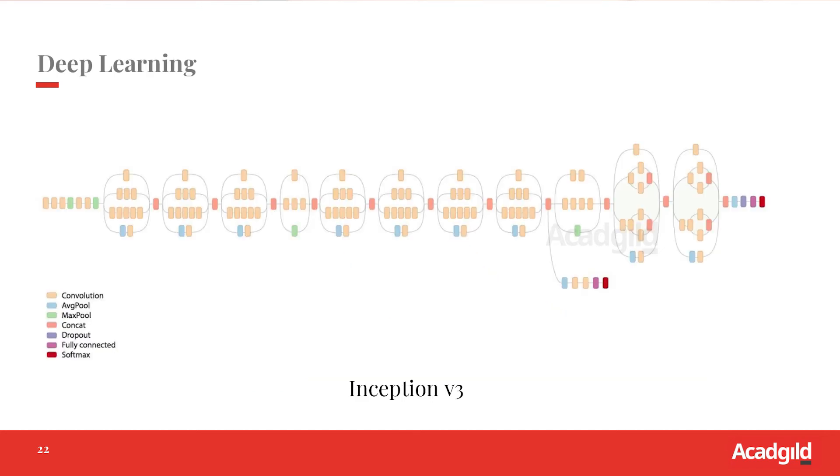Each of these blocks you are seeing is a layer. There are many more. Initially you have multiple such neurons, and this is a model called Inception v3 by Google. This is just to give an example of how complex it can get in deep learning.